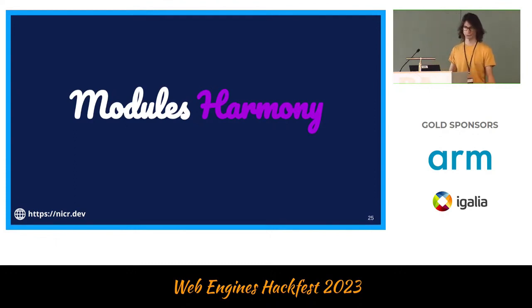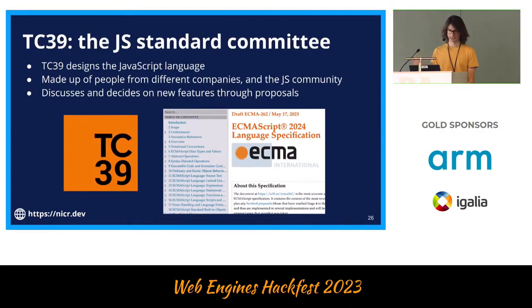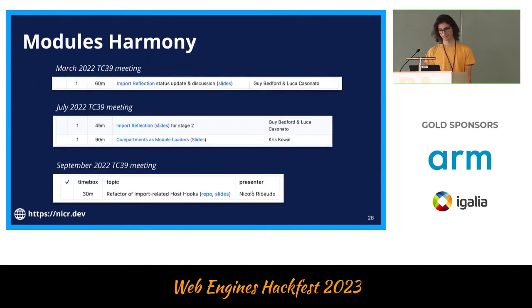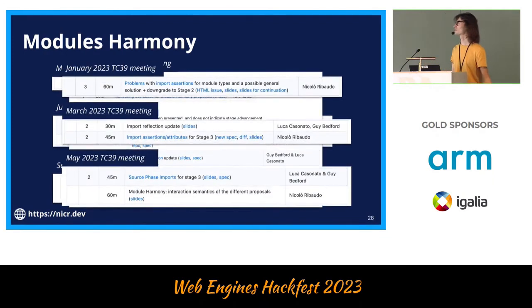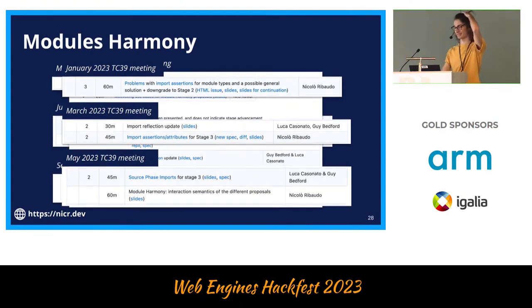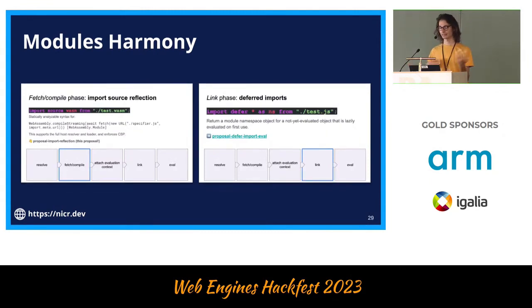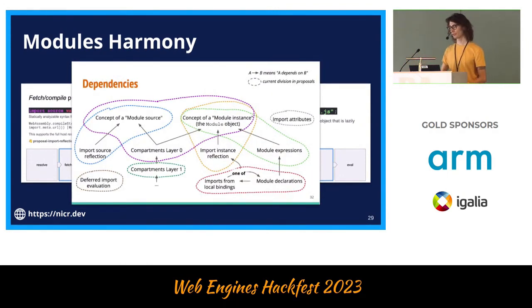ESM is great and people are using it, but there are still problems. Within TC39, there is this effort we call Modules Harmony. Harmony is a word already used in TC39 — it was used for what is then called ES6. It means that everything will, at some point, play well together. We've been discussing at every single TC39 meeting for the past year how the different proposals related to modules can work together — how to create a coherent story, and how to decide what to ship, in which order.